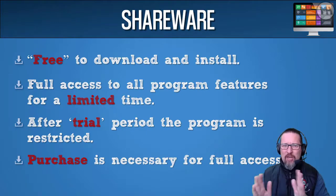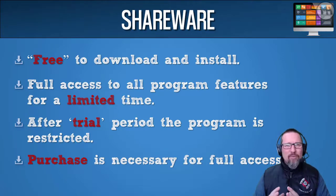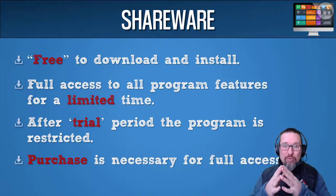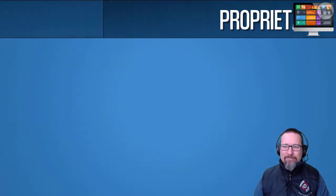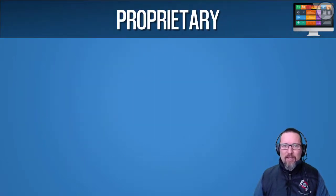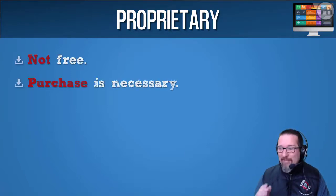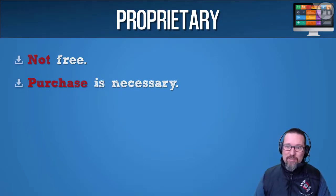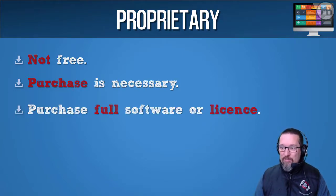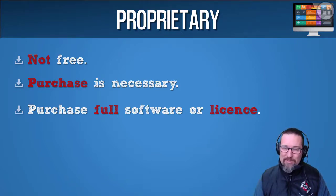The difference between shareware and freeware: freeware is free; shareware is the company sharing their software with you. The 'share' comes from the company who made the program sharing it with you — it's not about users sharing with each other. Proprietary software is commercial software; it's not free. You have to purchase the full software or purchase a license to use it.